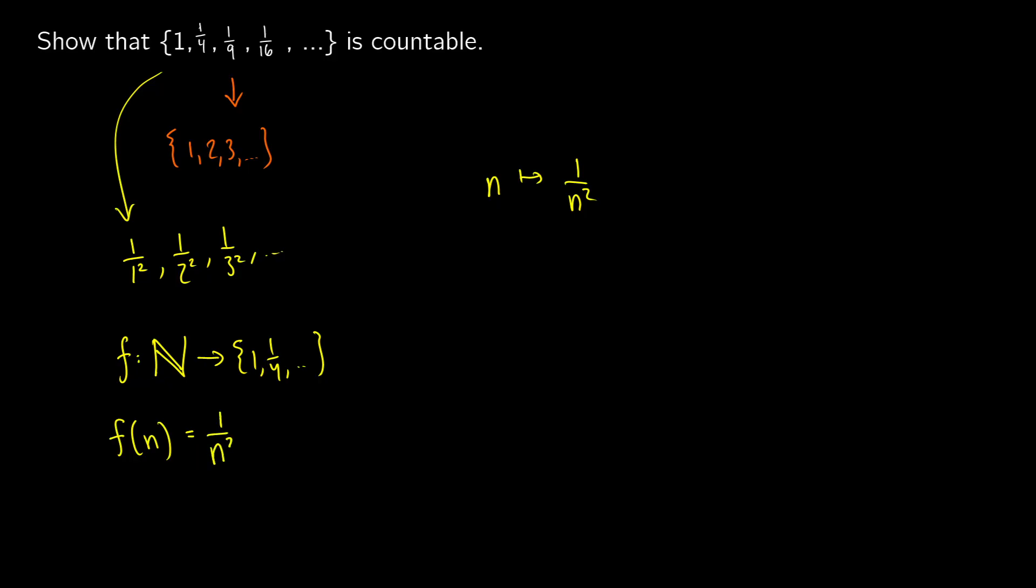So f(n) is equal to 1 over n squared, and because we get a nice mapping from our set to the natural numbers and vice versa because it's a bijection, we can claim that this is therefore countable.